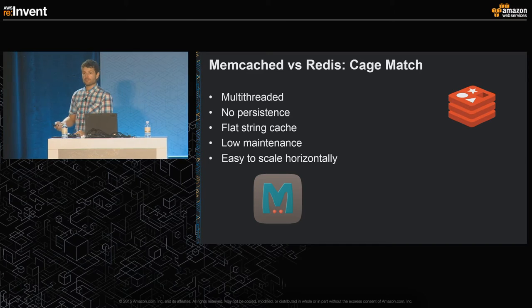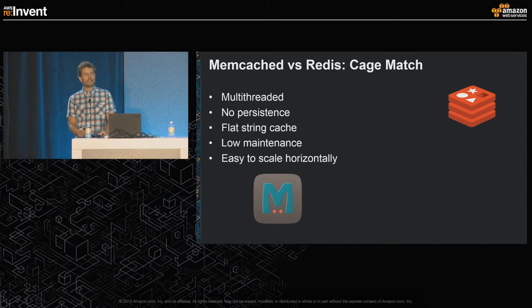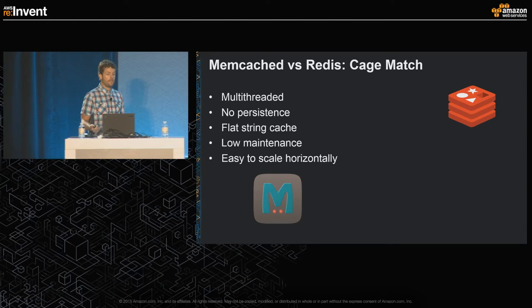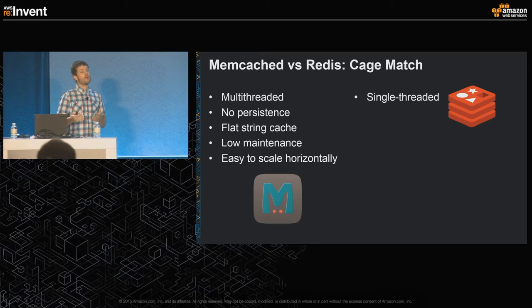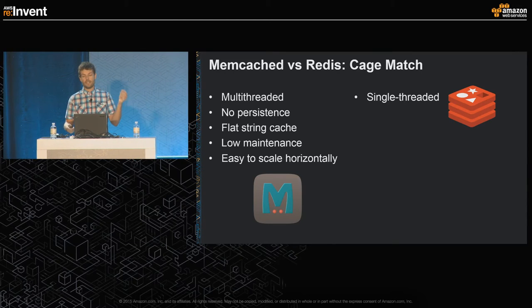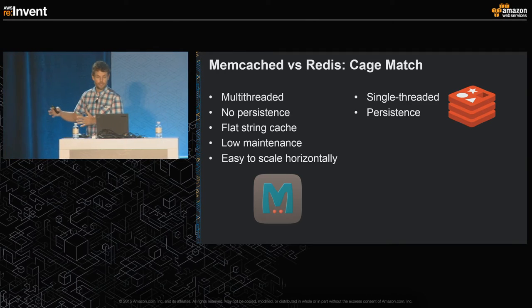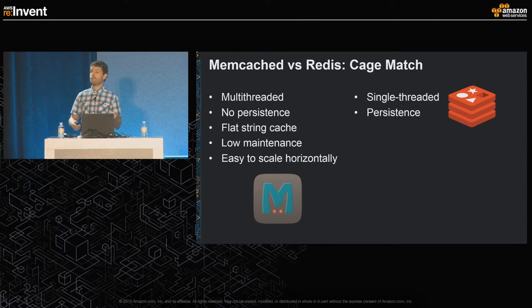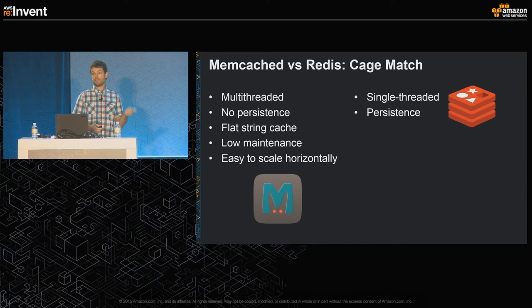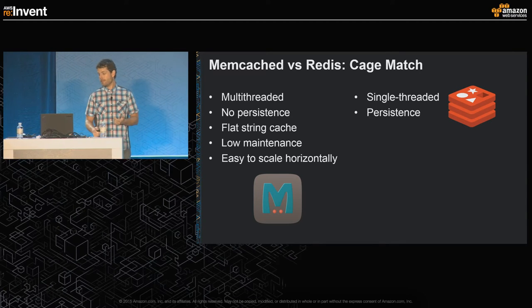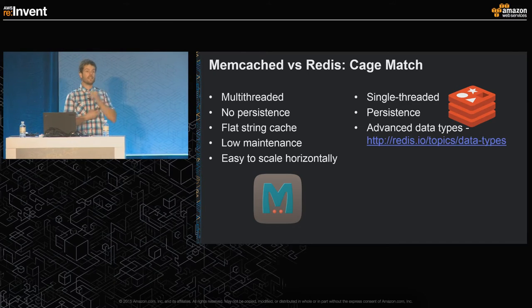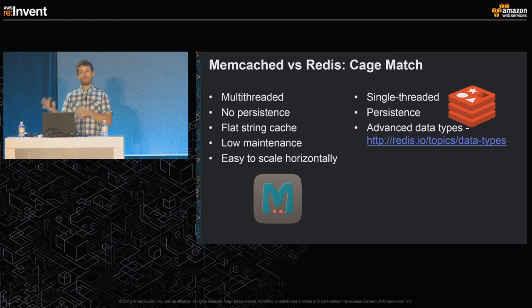Redis came out a few years ago, and prior to joining AWS I made games at PlayStation — when Redis came out it really changed a lot of things for gaming because of its more advanced data types and options. It's single-threaded, so on very large machines it doesn't have quite the same efficiency using all extra CPU cores. But it does have persistence, which means in some cases you can actually use it as a primary data store. It has advanced data types: lists, sets, and hashes.